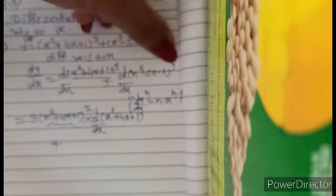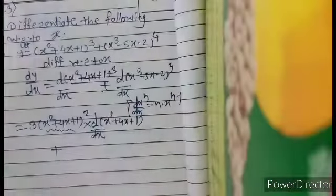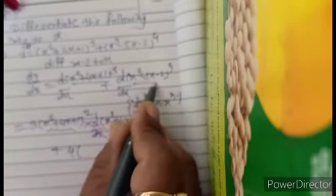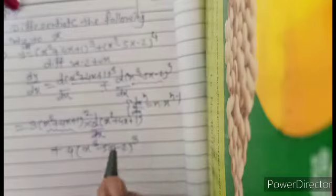For the second term, it is also in the x^n pattern. Here n is 4, so we get 4·(x³ - 5x - 2)^(4-1), which is (x³ - 5x - 2)³. Again, x here is the entire bracket, so we multiply by the derivative of (x³ - 5x - 2) with respect to x.